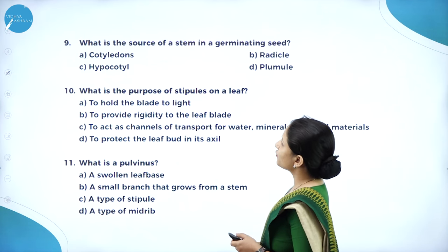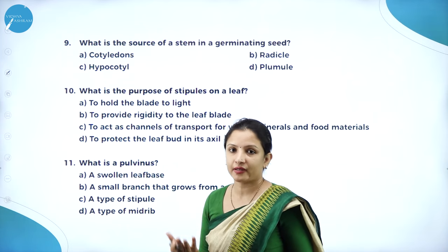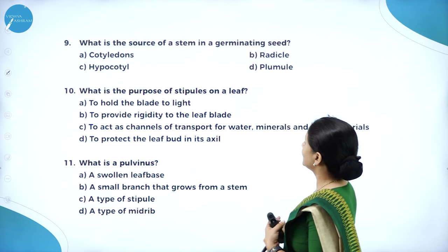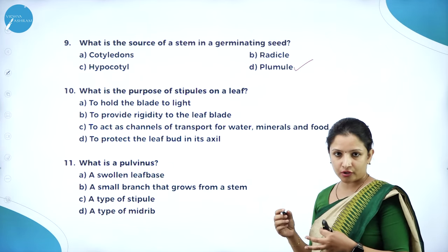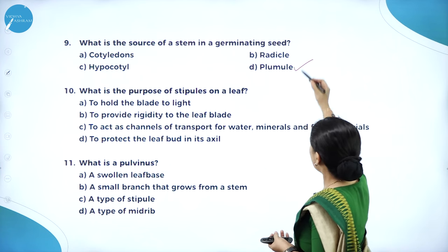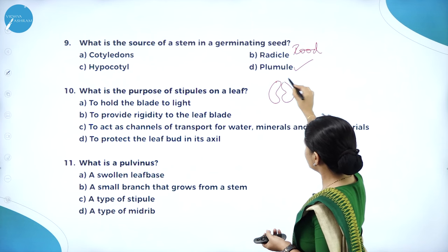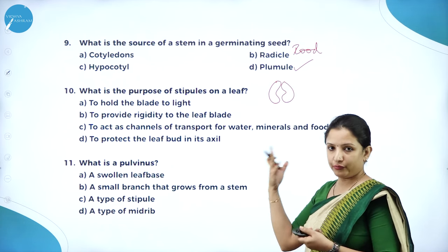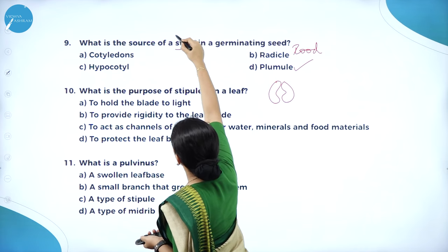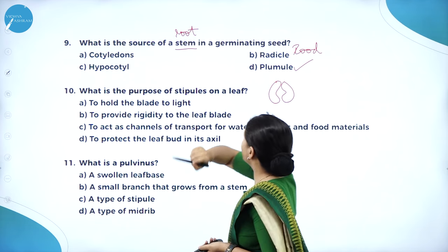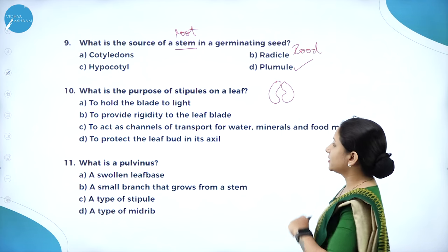What is the source of a stem in a germinating seed? The stem or shoot arises from the plumule, and the root arises from the radicle. The cotyledons provide nourishment to the developing plumule, shoot, and root. So plumule is the right answer. If the question asked for the source of a root, the answer would be radicle.